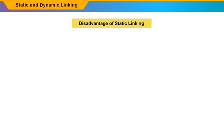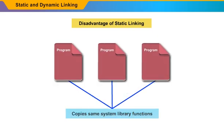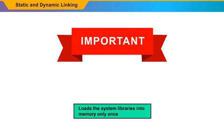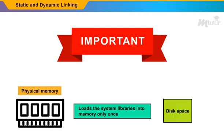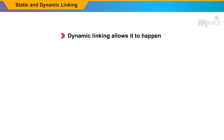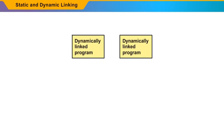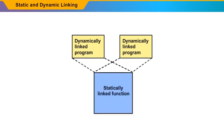The main disadvantage of static linking is that every program contains copies of the same system library functions. So it is important to load the system libraries into memory only once, in terms of both physical memory and disk space. Dynamic linking allows this to happen. Linux implements dynamic linking through a special linker library in user mode. Each and every dynamically linked program holds a small, statically linked function.